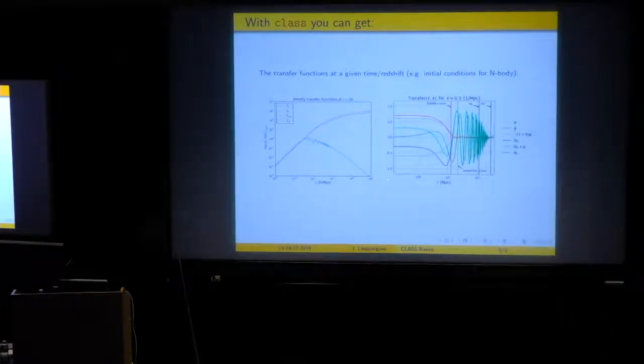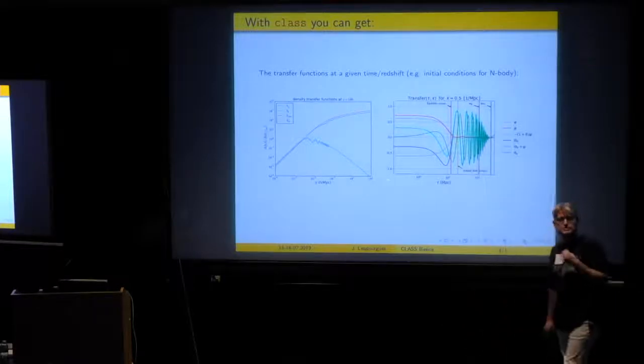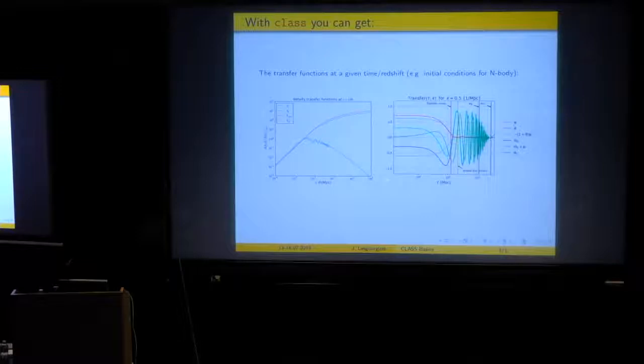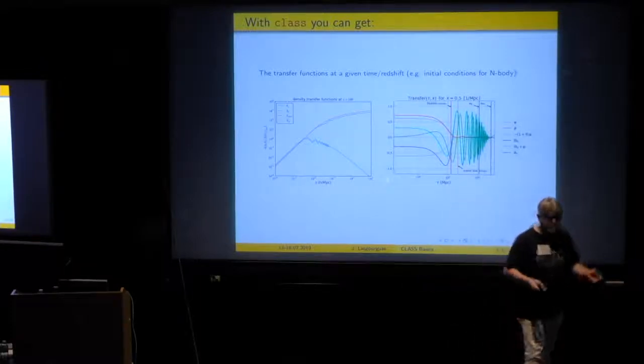If you want to understand what is a new effect in your new model and to explain it, for instance, to students or in a seminar, then maybe you want to do some more original plots. Maybe you want to choose a wave number and show the evolution of the different perturbations as a function of the conformal time. So this is a plot showing the evolution of the most interesting quantity for CMB physics that I use when I teach CMB physics to master students. Or this is the opposite here. You fix the time or a redshift and at this time or redshift, you try to plot different perturbations as a function of wave number. Of course, it's very nice to do this if you want to understand how things evolve with respect to time.